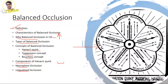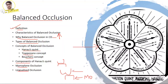Finally, write in brief about monoplane and lingualized occlusion. In monoplane occlusion, both the maxillary and mandibular teeth are non-anatomic. In lingualized occlusion, the maxillary palatal cusp contacts the mandibular teeth, which are monoplane or zero-degree teeth, while the maxillary teeth are anatomic or semi-anatomic with the palatal cusp contacting the central fossa.